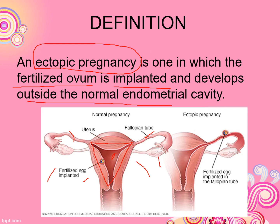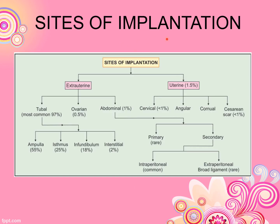The sites of implantation include extra-uterine and intra-uterine locations. Extra-uterine sites include tubal, ovarian, and abdominal. Tubal refers to the fallopian tube. Abdominal can be primary — which is a rare condition — or secondary, which is extra-peritoneal. Peritoneal involvement is also a rare condition.